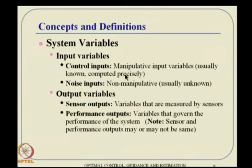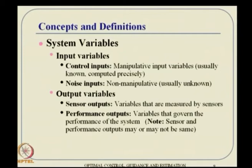There is another class of inputs called noise inputs — they come as inputs to the system and disturb it. For example, road conditions affect a car's drive — that is a noise input. Similarly, atmospheric gust disturbs an aircraft's motion. These are non-manipulative, not under our control, but we have to handle them. That is how the necessity of robust control arises.